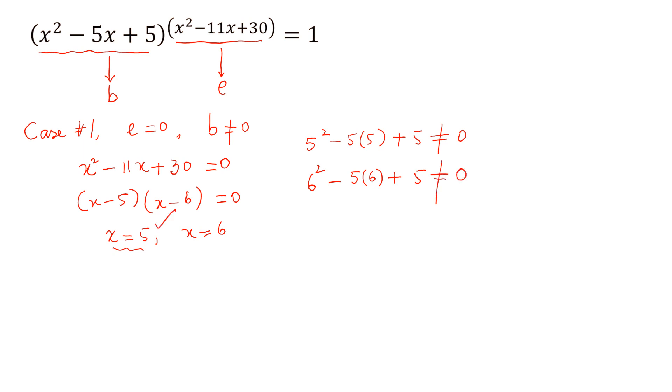Now for case 2, case 2 is if the base is 1. If base is 1, it means x² - 5x + 5 = 1 and we can write this as x² - 5x + 4 = 0.